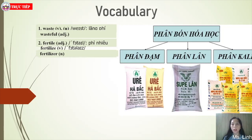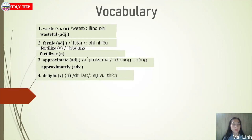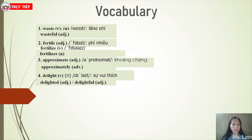Number three: approximately — adverb. Almost correct but not complete. Number four: delight — verb and noun. As a verb: to give somebody a lot of pleasure, enjoy. As a noun: a feeling of great pleasure. We also have two adjectives: delighted and delightful.